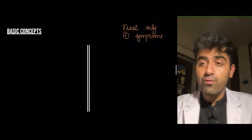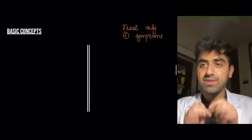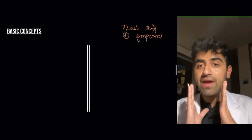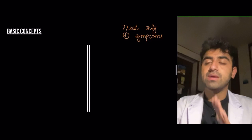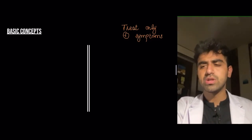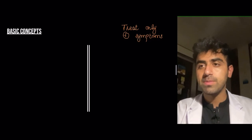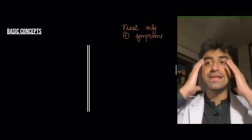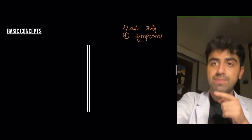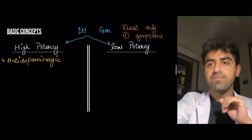Basic concepts to remember before we start: first generation antipsychotics treat only positive symptoms — they do not treat the negative symptoms of schizophrenia. Negative symptoms include things like apathy and flat affect. Apathy is when the person does not respond to stimuli as much as they used to, and flat affect is when the person's normal demeanor seems completely expressionless.